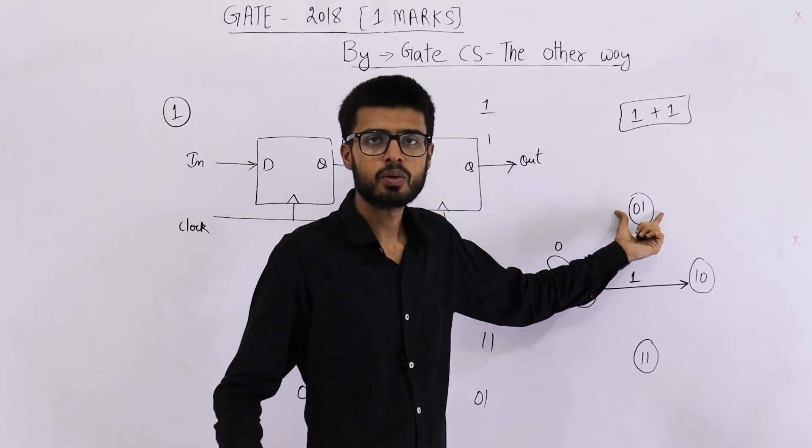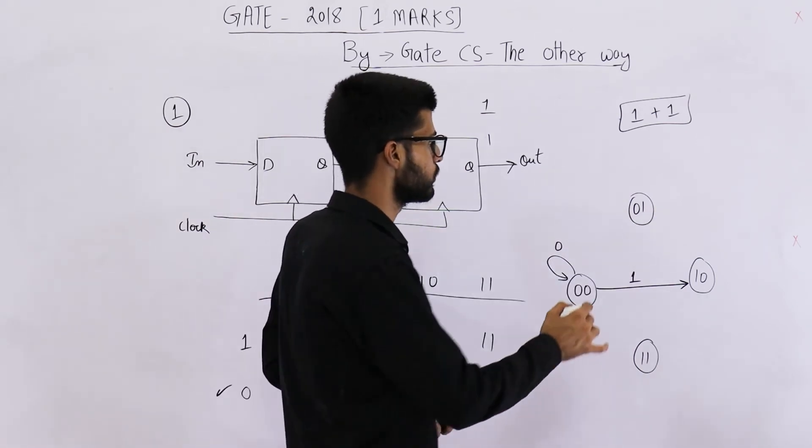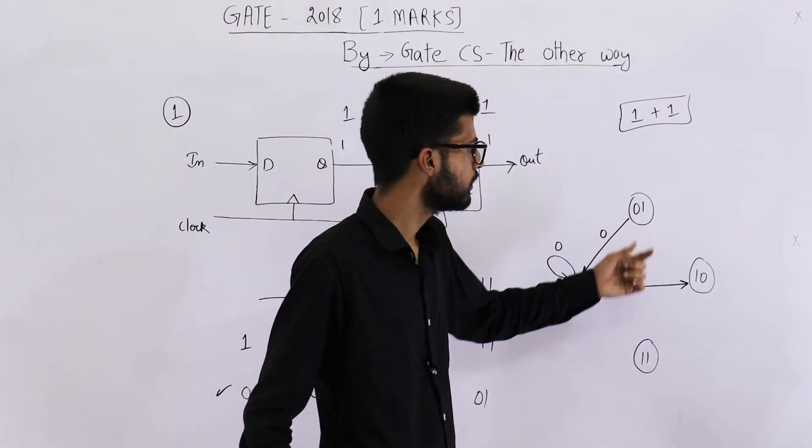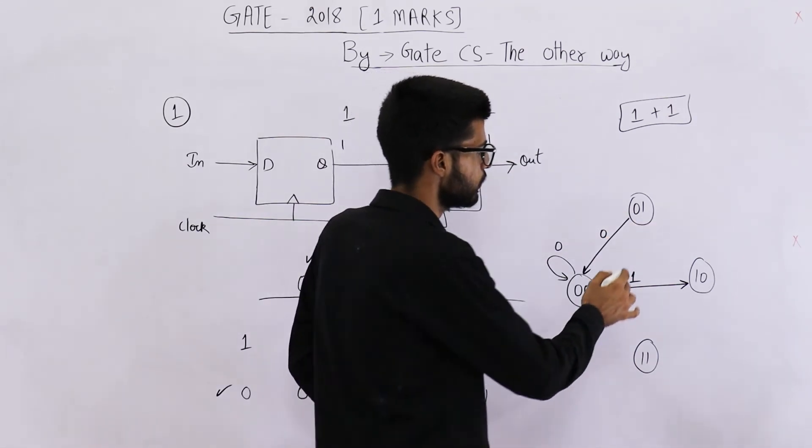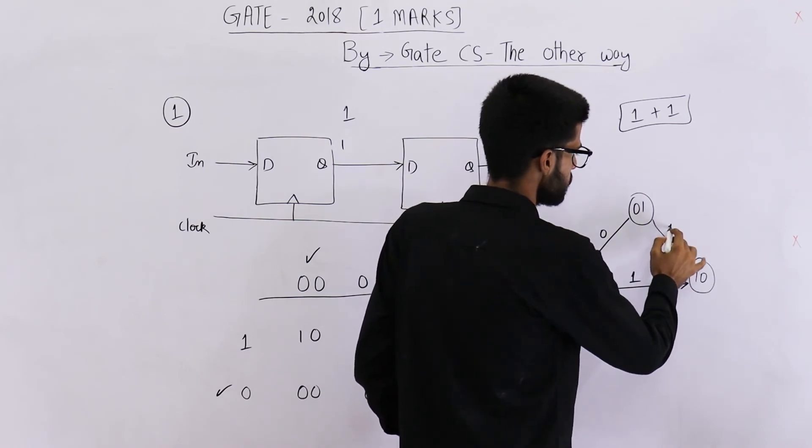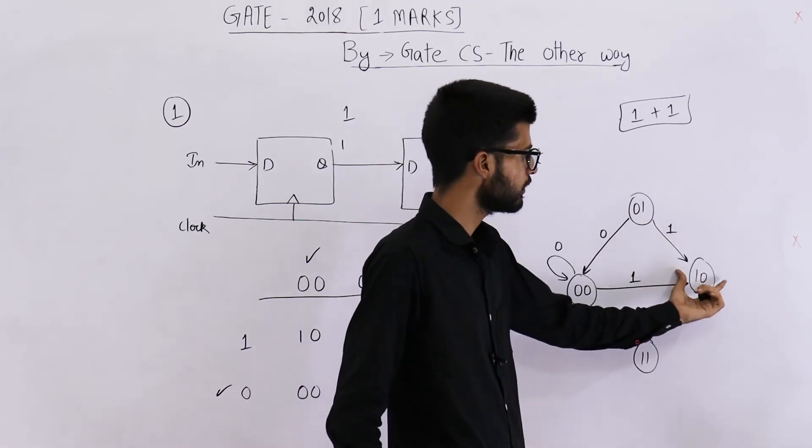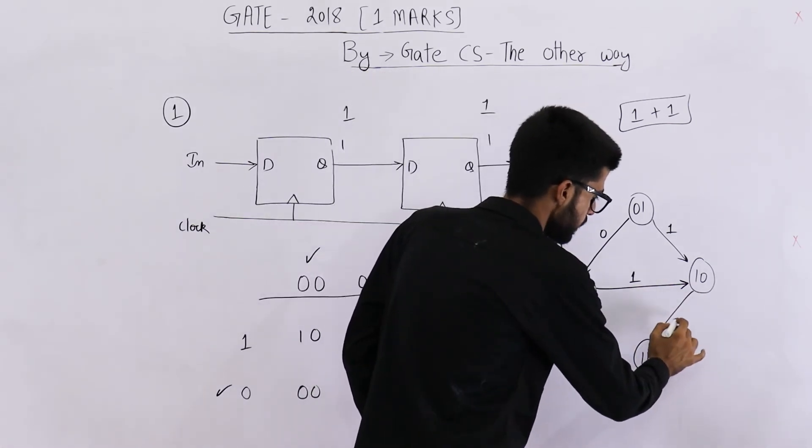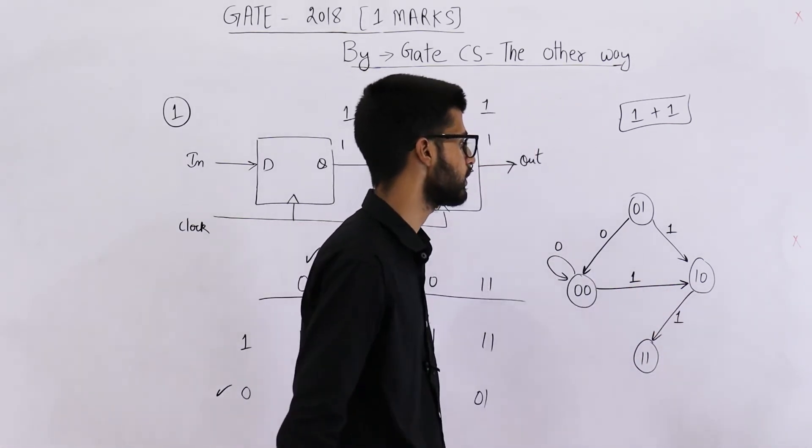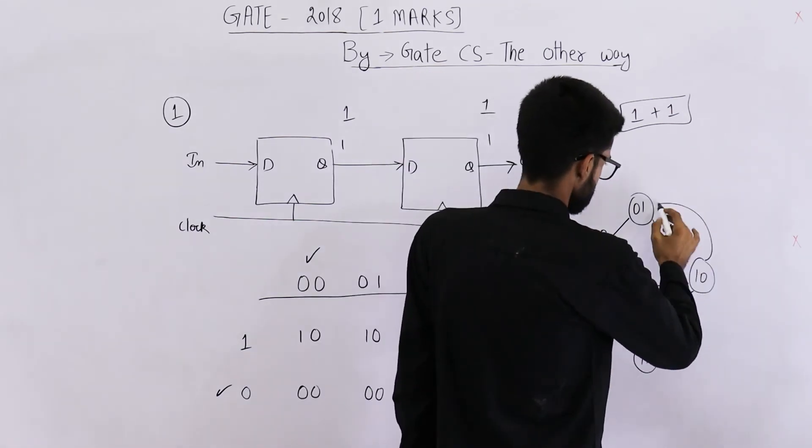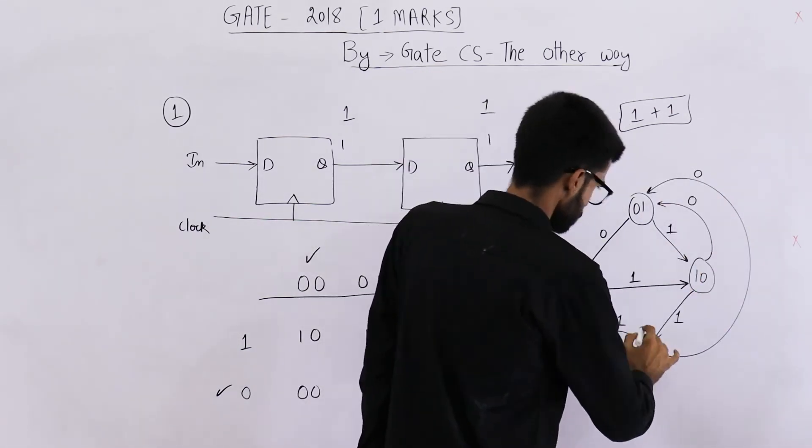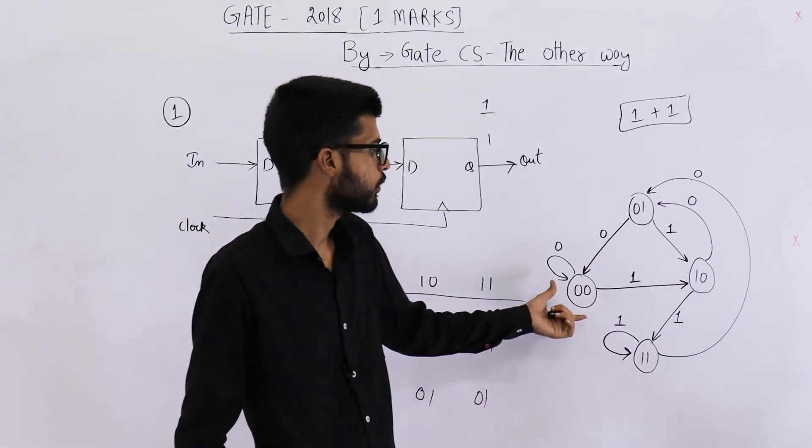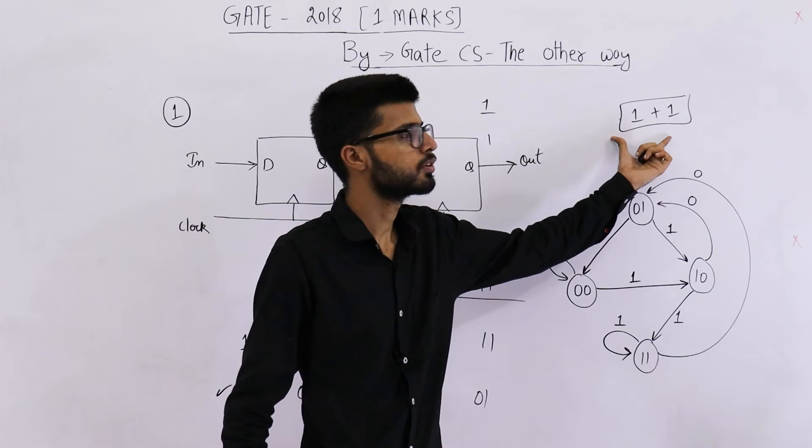Now this state is done. Here if value of in is 0, the new state will be 0, 0. So on 0, this is the transition. On 1, new state will be 1, 0. So this is the transition. On this state, if value of in is 1, this will be the transition. Similarly, I'm completing the diagram. So this is the state transition diagram. You can see we only have two self loops. So answer is 2.